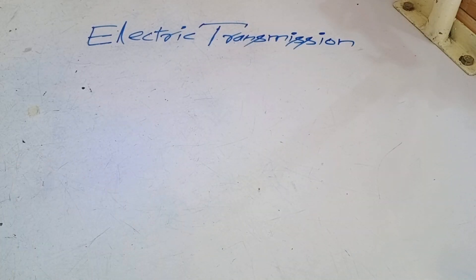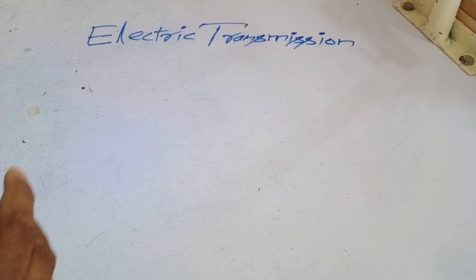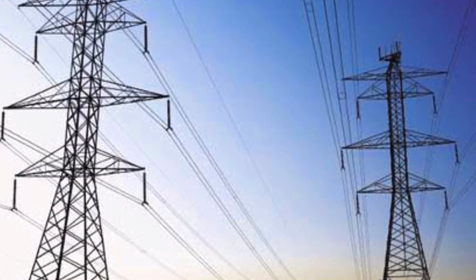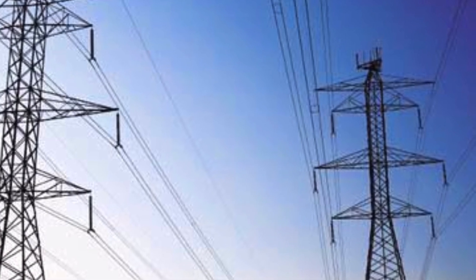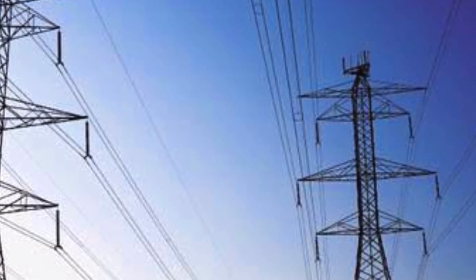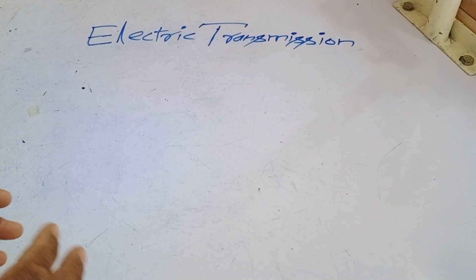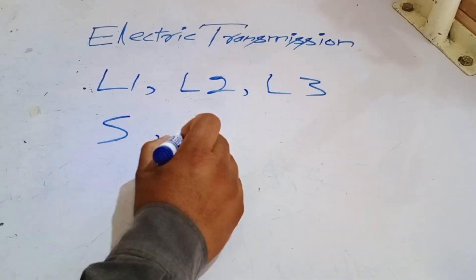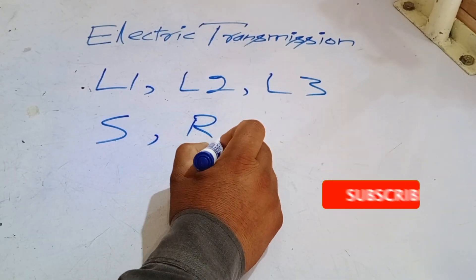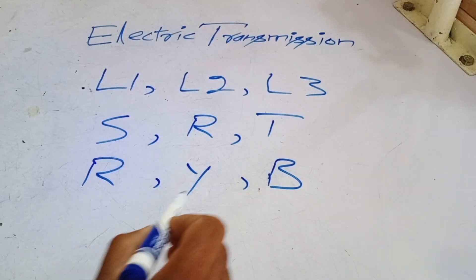What is electric transmission? It refers to the process through which electricity is delivered to your home, office, or any other location. All the wires, poles, and equipment used in this process are part of electric transmission. The cables used in this system are given specific names. In different regions or countries, these cables are referred to differently — for example, in some places they are called L1, L2, L3, while in others they might be labeled as SRT or RYB.